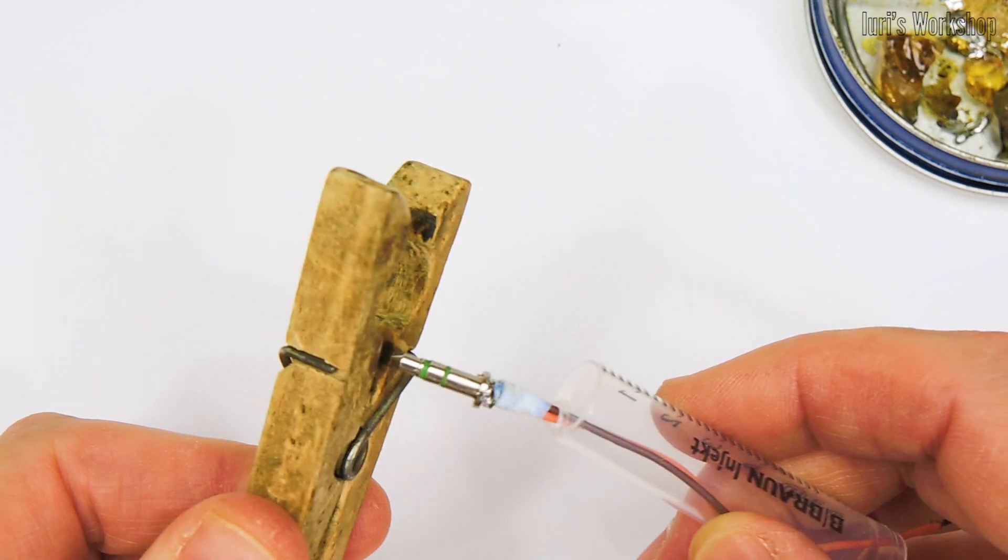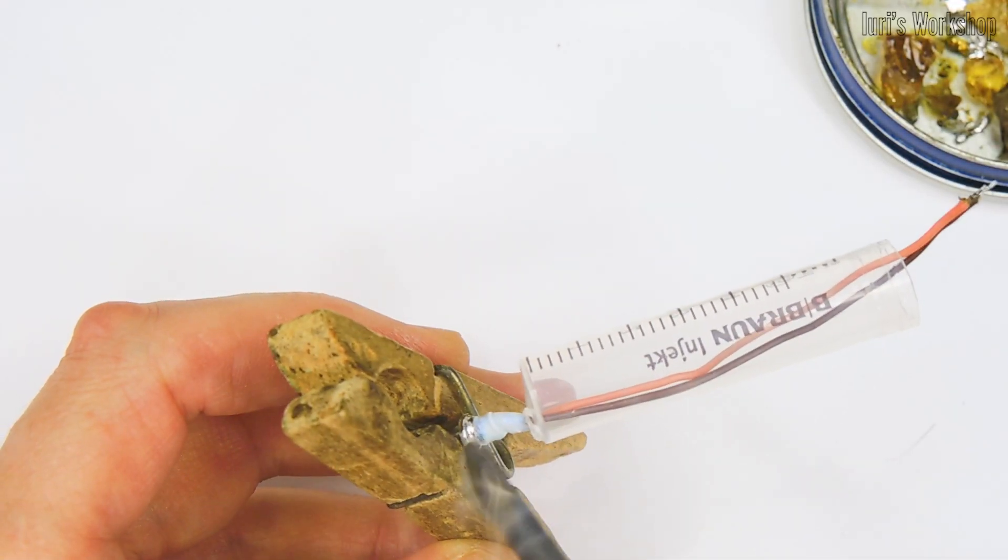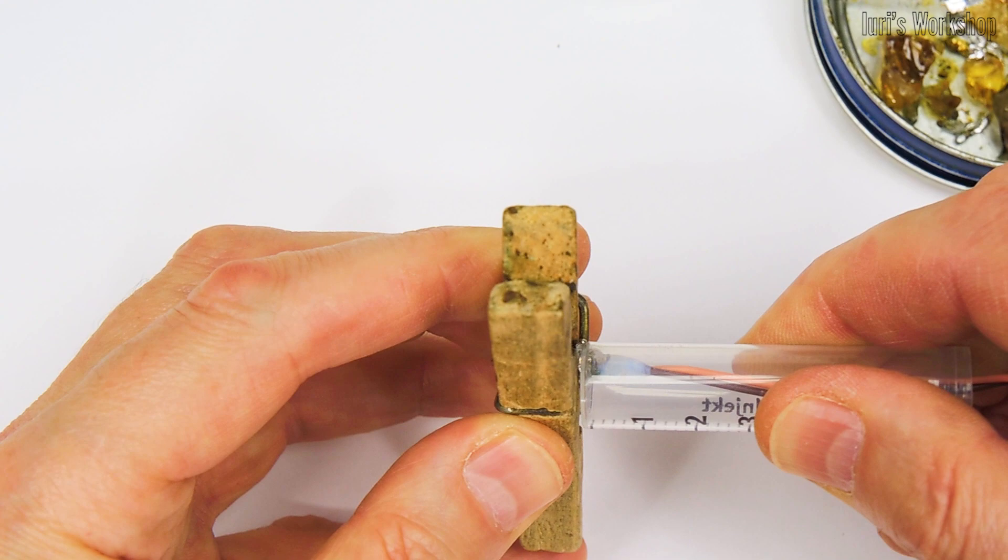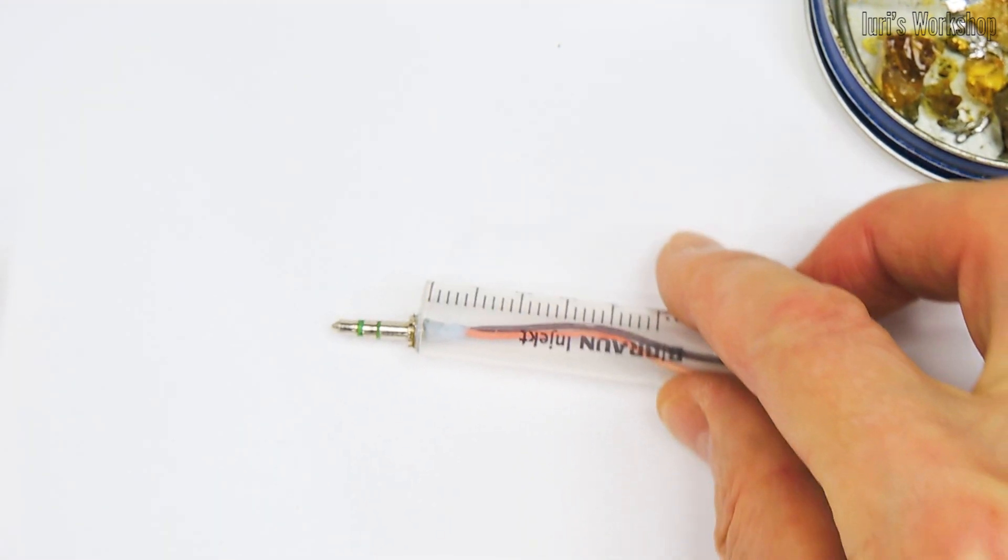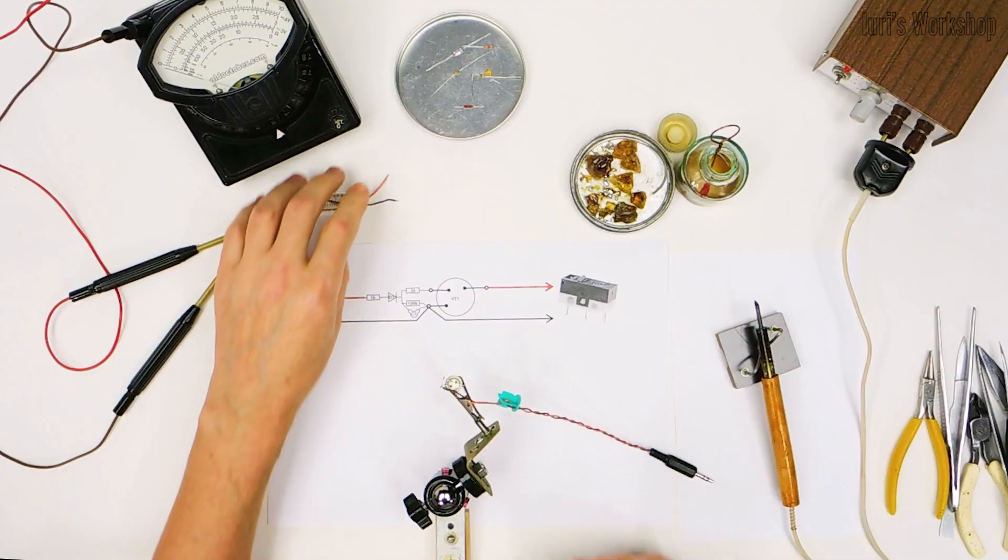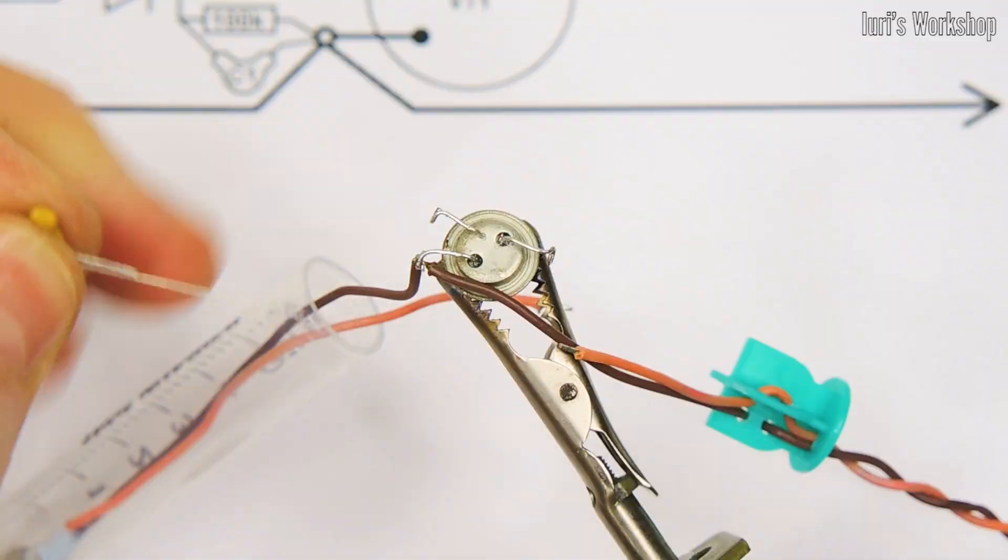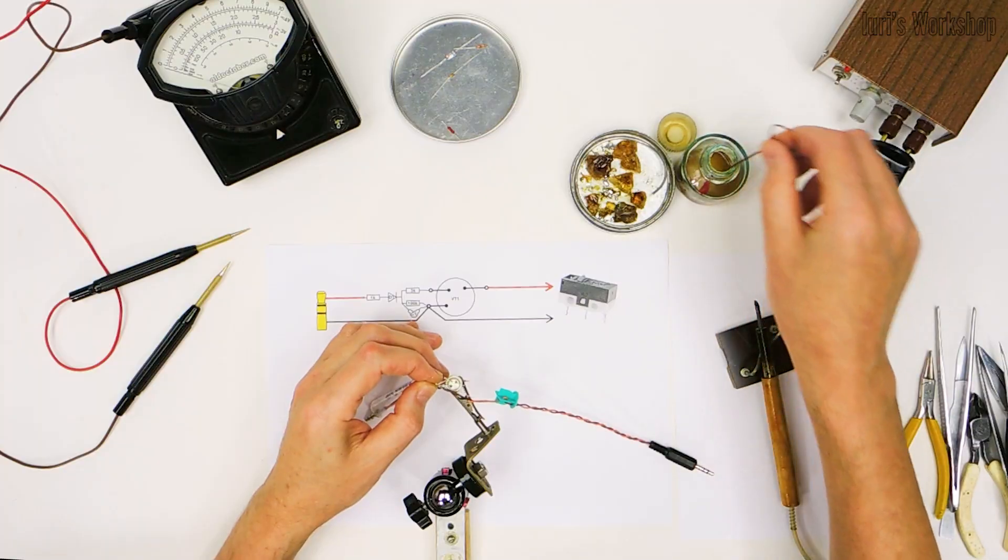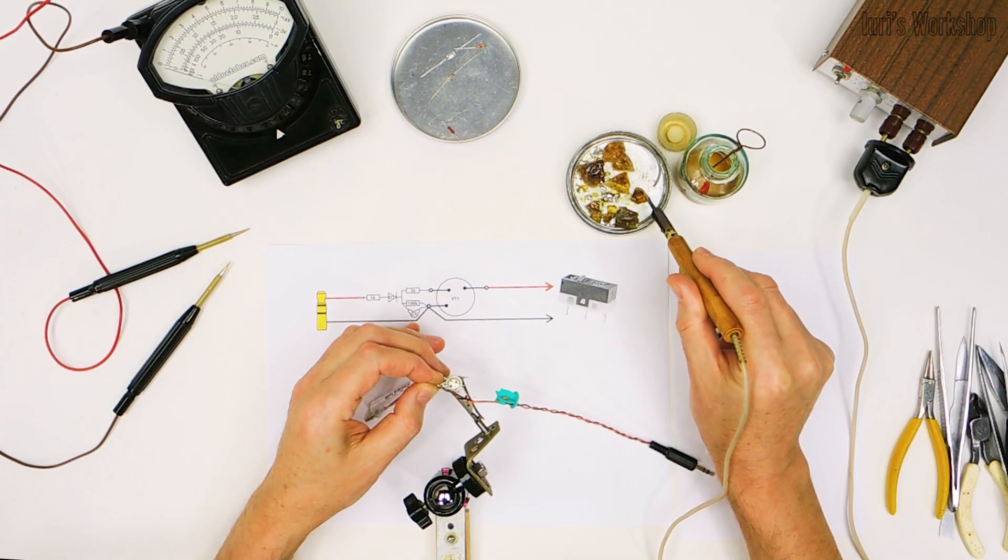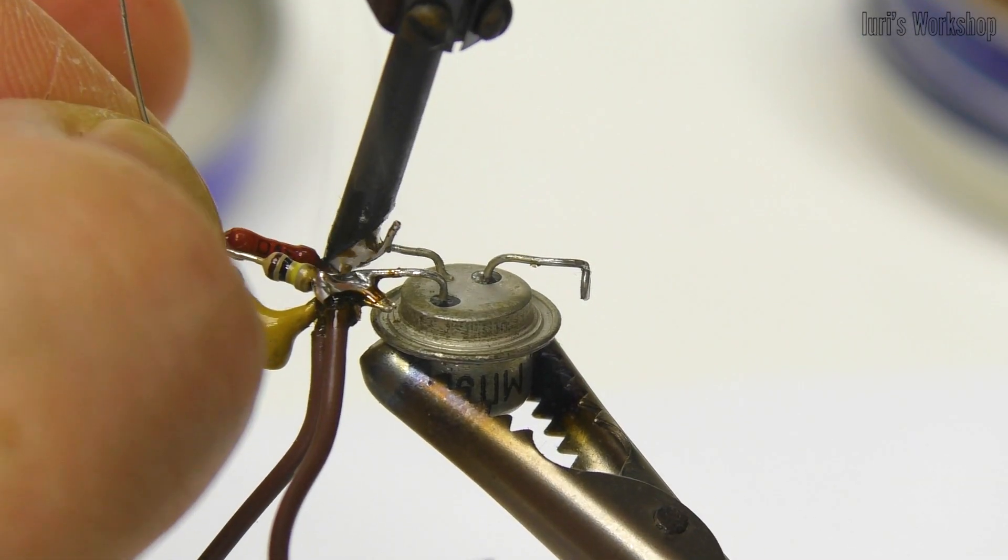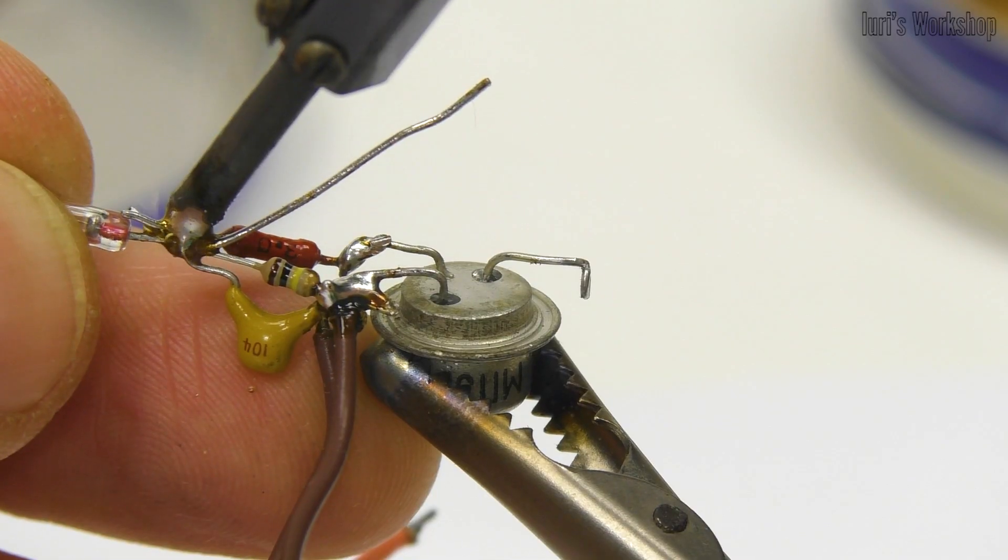I assembled the autoclicker circuit using the point-to-point method and placed it in the body of a disposable syringe. I didn't add a switch to the circuit because I can use the start-stop button of the player itself instead.